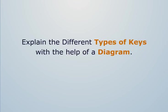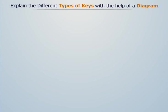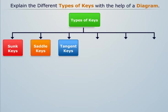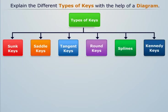Explain the different types of keys with the help of a diagram. The different types of keys are sunk keys, saddle keys, tangent keys, round keys, splines, and Kennedy key.